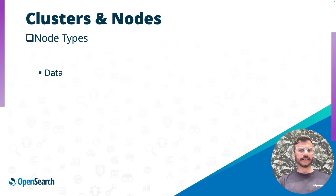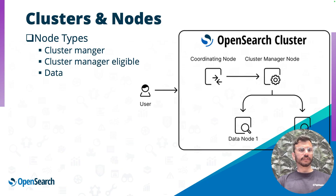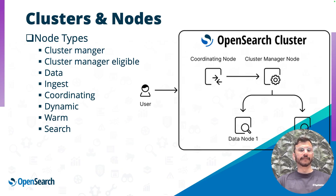An OpenSearch node that holds the shards and the replicas — basically the data — are called the data nodes. We also have other types of nodes: we have the cluster manager and the cluster manager eligible nodes for cluster orchestration, formerly known as master nodes and master eligible nodes. We also have the ingest node, which is for transforming data before indexing. Coordinating nodes, as the name suggests, coordinate search and indexing requests — imagine these as a kind of smart load balancer. Then we have dynamic nodes, for example dedicated machine learning nodes for hosting models, dense models, or sparse models.